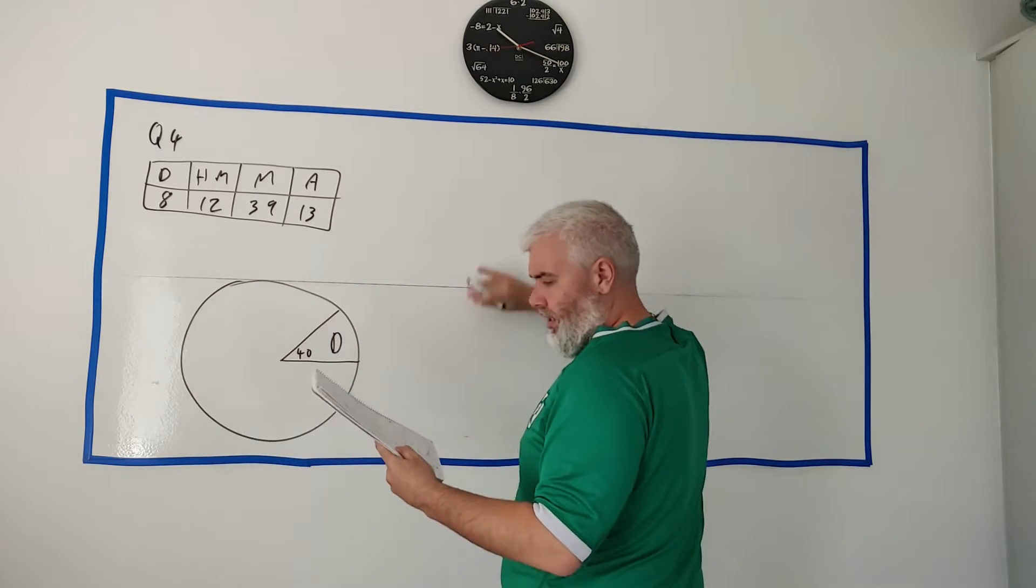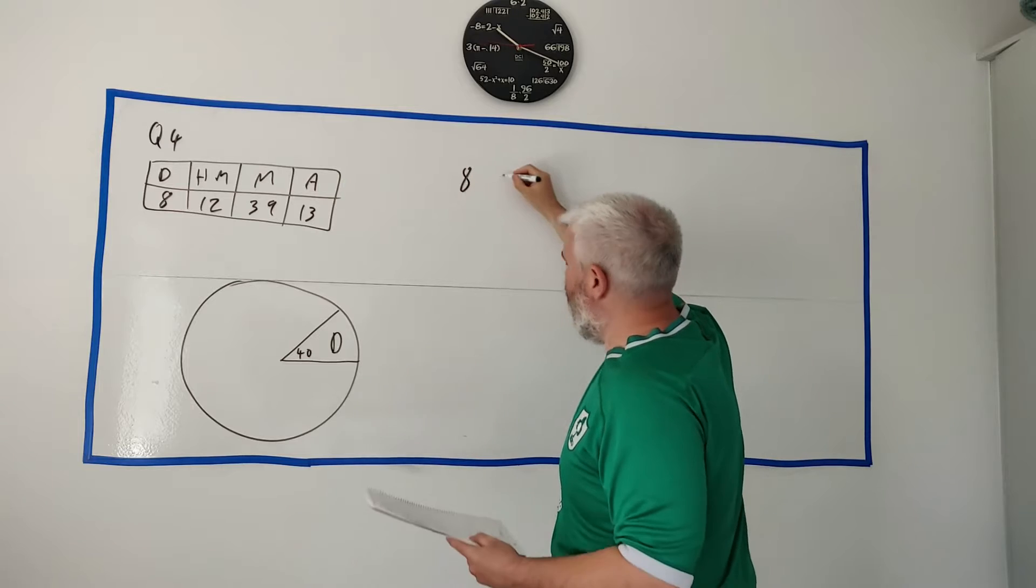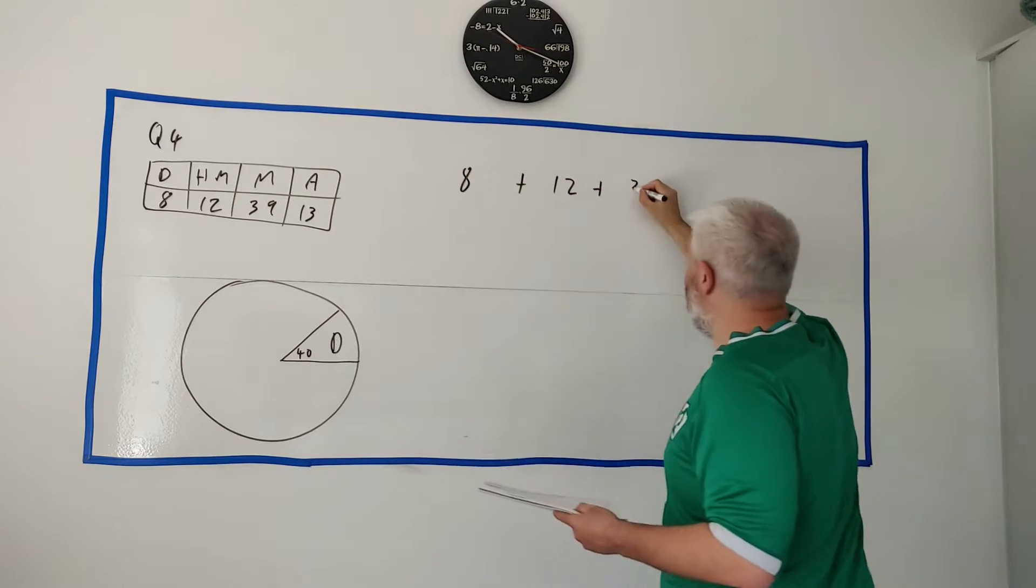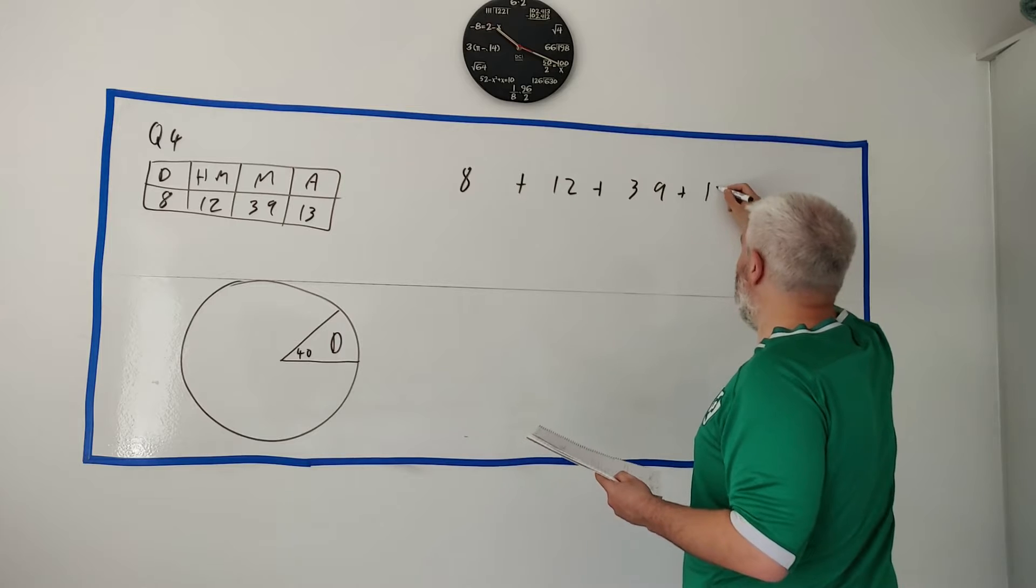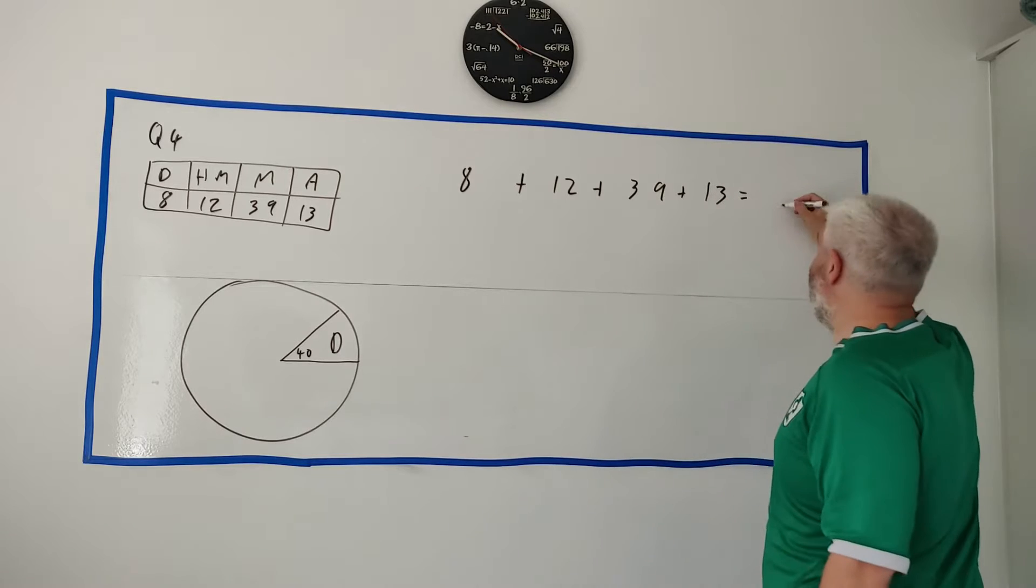So the first thing I need to do is add up how many students there are. So if we just add these numbers together, let me write that out here, 8 plus 12 plus 39 plus 13 and that adds up to 72.